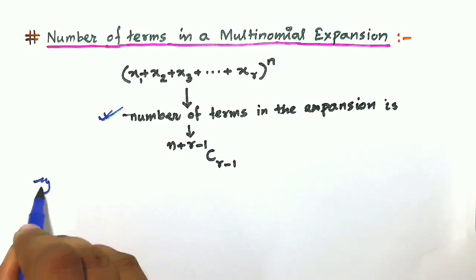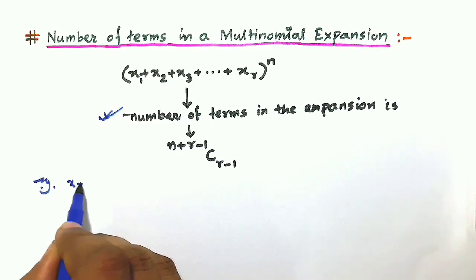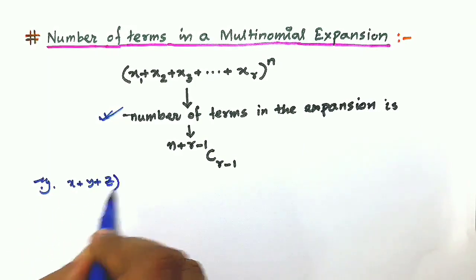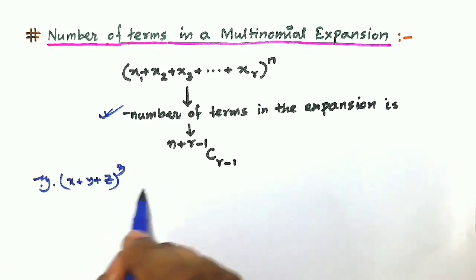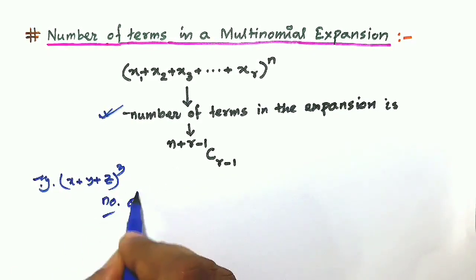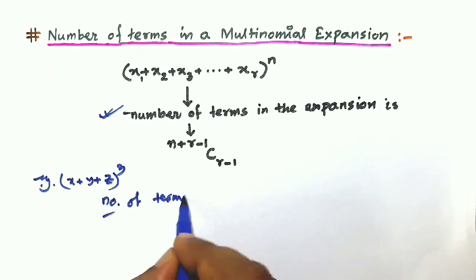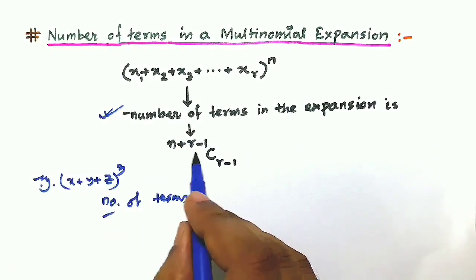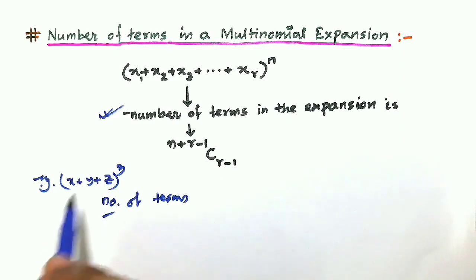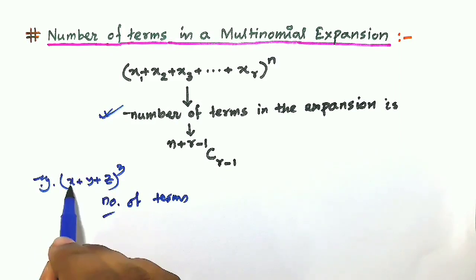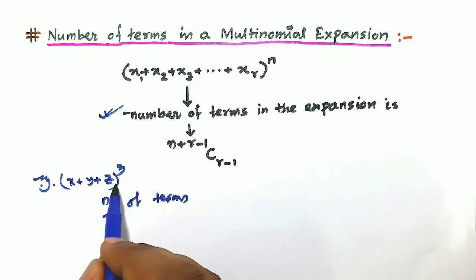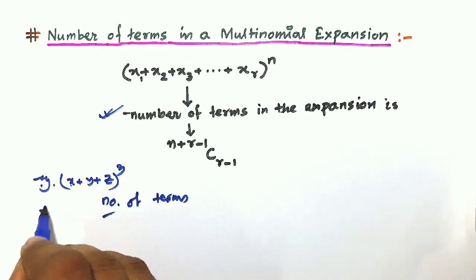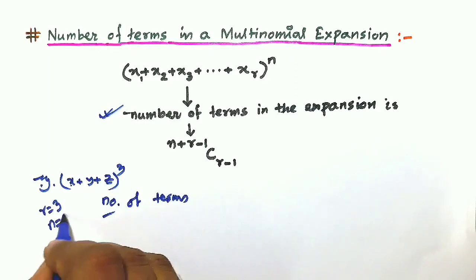Take the example (x + y + z)³. The number of terms here will be determined according to the formula n+r-1 C r-1. This is a trinomial, so there are 3 terms, meaning r is equal to 3, and n is equal to the index, which is also 3.